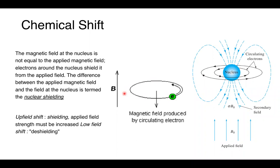Here are a couple of diagrams. In one, the electron is spinning around creating a magnetic field that opposes the applied magnetic field — though it's also possible for it to enhance it. In another diagram, we have a nucleus with circulating electrons in their orbitals generating a secondary magnetic field, again opposing the applied field. All these electrons are spinning around, generating their own magnetic fields that can oppose or enhance the applied field, resulting in what's called a chemical shift.